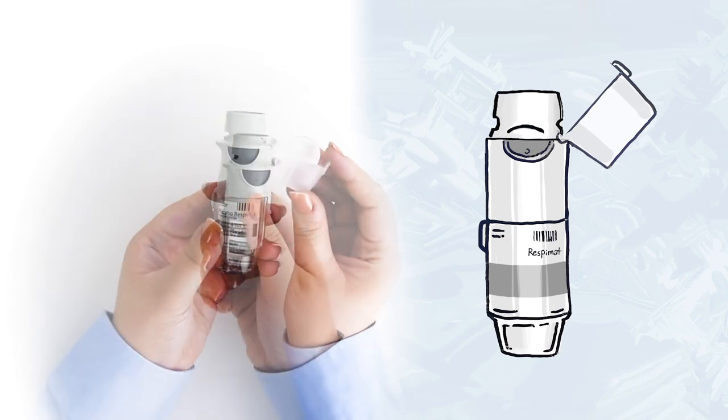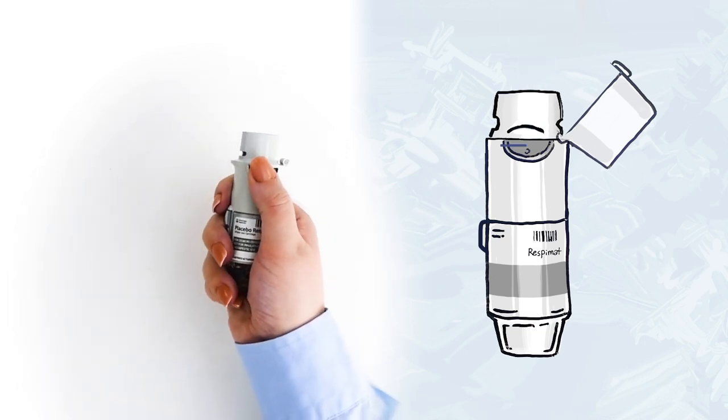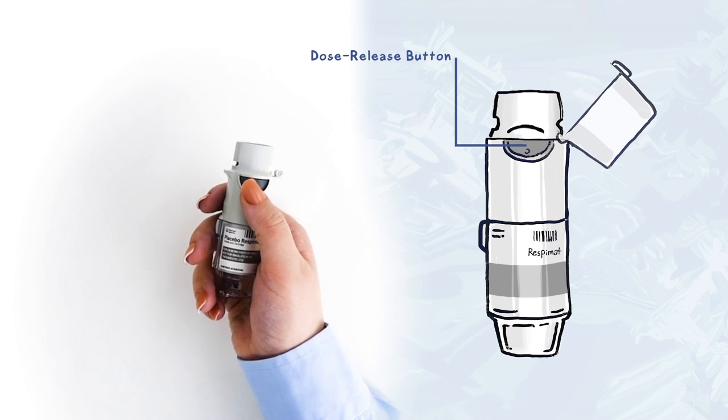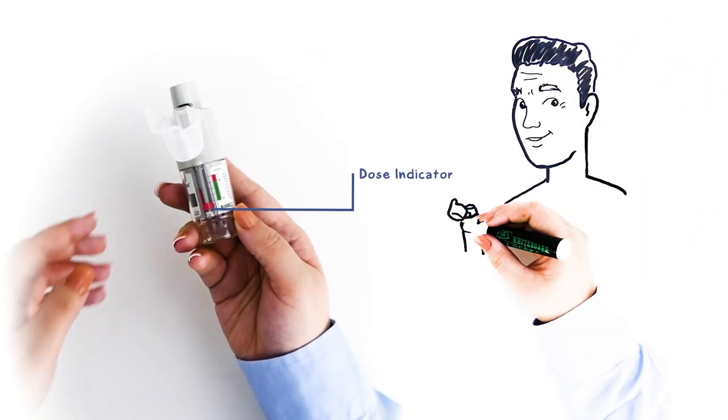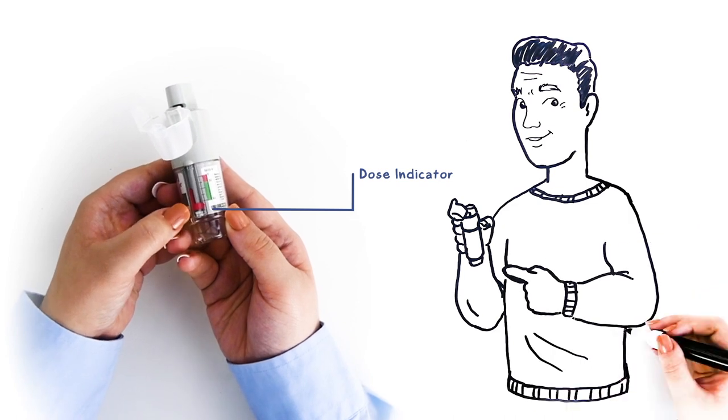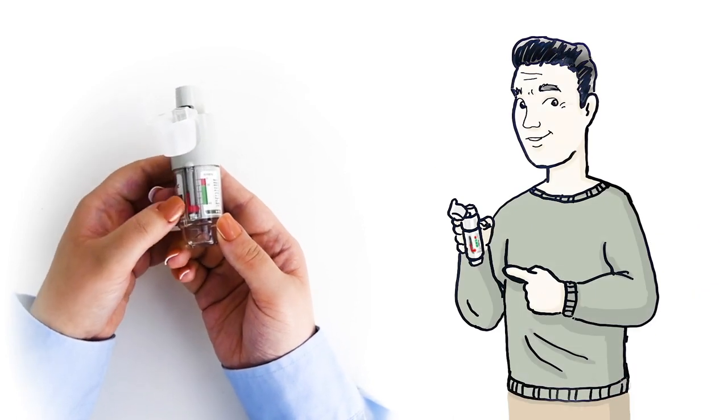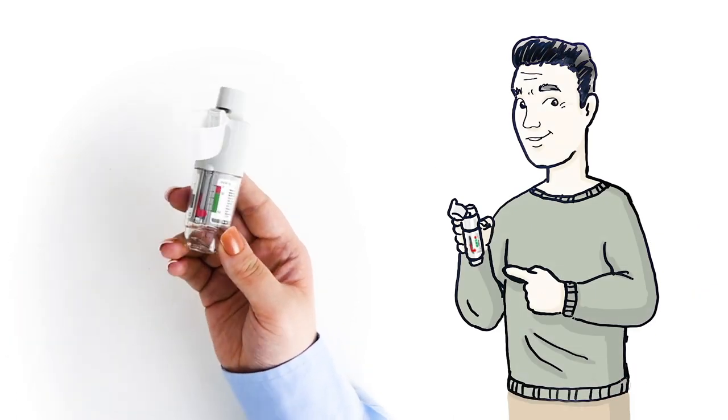The medicine is discharged as a soft mist from the medication cartridge when the dose release button is pressed. A dose indicator on the side of the inhaler shows about how many doses are left. When the indicator points to the red area, it's time to prepare your next inhaler.